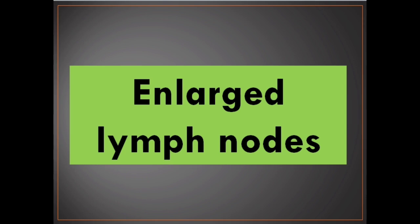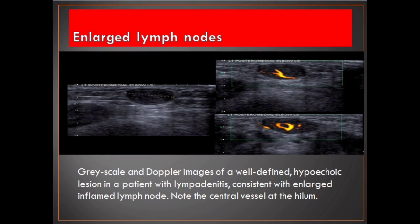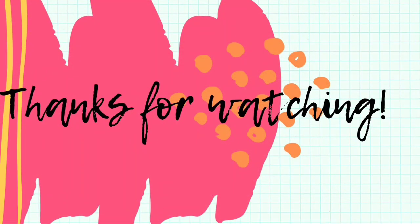Enlarged lymph nodes. Enlarged lymph nodes can present like superficial lumps. They usually appear on ultrasound as oval solid hypoechoic masses with a central hyperechoic hilum and hilar vascularity demonstrated on Doppler. If the echo texture of the nodule is preserved and hypervascularity is noted, an inflammatory lymphadenopathy may be suspected. Grayscale and Doppler images of a well-defined hypoechoic lesion in a patient with lymphadenitis, consistent with an enlarged inflamed lymph node — note the central vessel at the hilum. Our lecture will be continued in the next video. Thank you for watching and goodbye.